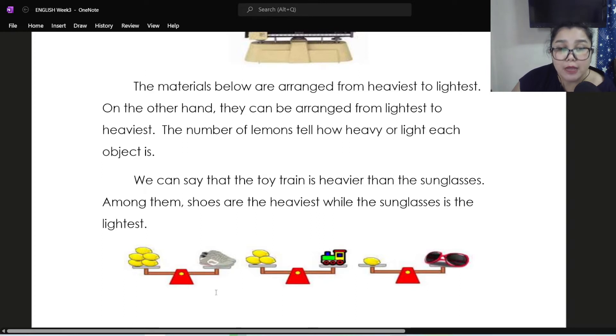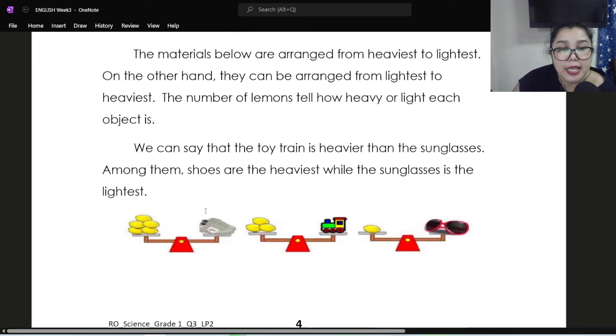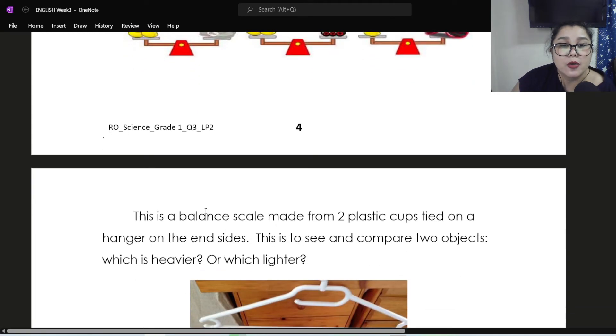So the number of lemons tell how heavy or light each object is. So the shoes, five lemons. The toy train, three lemons. And the sunglasses, one lemon. So this one is arranged from heaviest to lightest. It means shoes are the heaviest. The sunglasses are the lightest. We can say that the toy train is heavier than the sunglasses. Among them, shoes are the heaviest while the sunglasses is the lightest. So that's arranging mass or ordering mass.